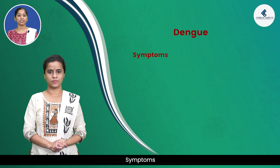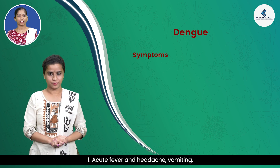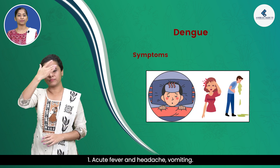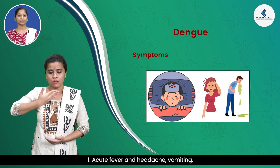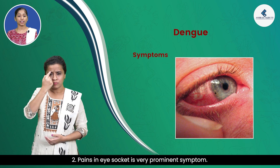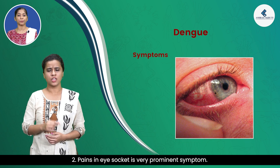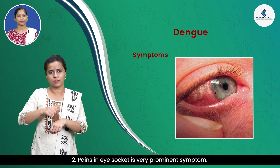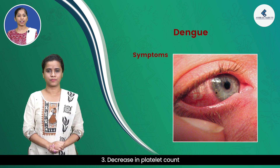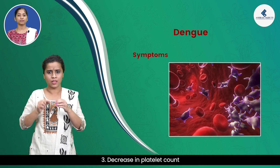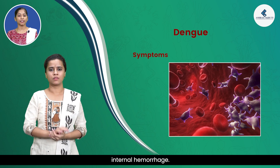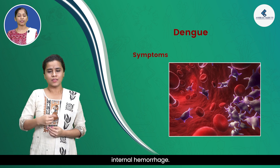Symptoms of dengue include acute fever and headache, vomiting, and pain in the eye socket, which is a very prominent symptom. There is also a decrease in platelet count, which may lead to internal haemorrhage.